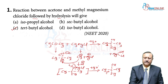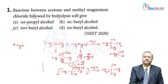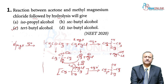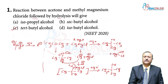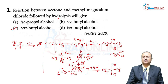My dear students, you should always understand the basic concept of RMgX. When the Grignard reagent is decomposed in water, it gives a carbanion (negative charge carbon ion) and positive charge magnesium ions. The CH3⁻ ion is the carbanion which attaches to the positive carbon of the carbonyl part of acetone, while the negative part attaches to MgCl. That is why you get the addition compound. On hydrolysis you get the alcohol, called tertiary butyl alcohol.